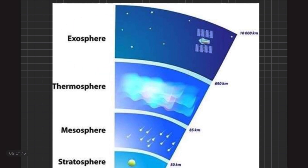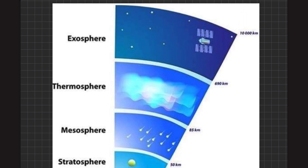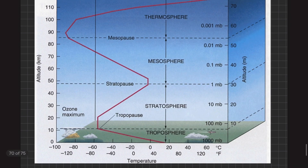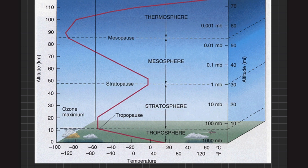The exosphere extends from about 650 kilometers up to about 10,000 kilometers. It contains very light gas molecules — mostly hydrogen and helium — that lie far away from each other. Beyond the upper limit of the exosphere, space is considered void. Since the exosphere doesn't have much of interest, it is generally not focused on in our main discussion.